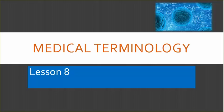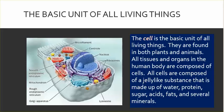Medical Terminology, Lesson 8. The basic unit of all living things — the cell — is found in both plants and animals. All tissues and organs in the human body are composed of cells.